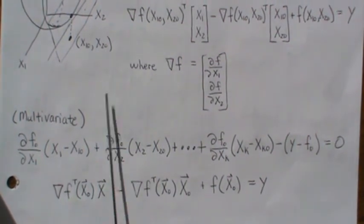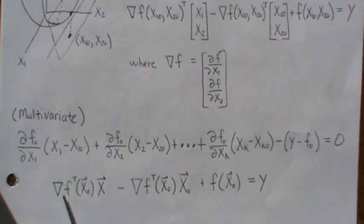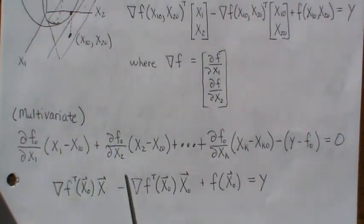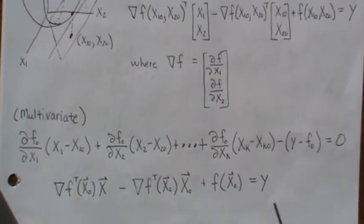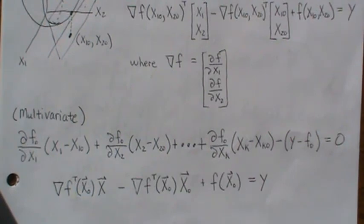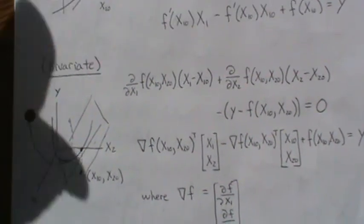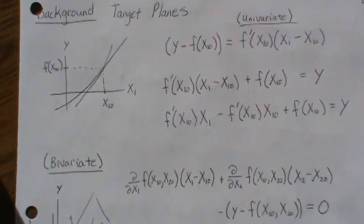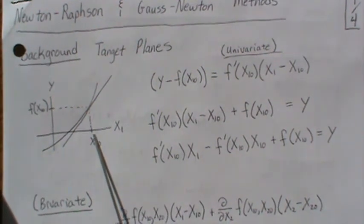Then you can put this in vector notation where this is the gradient, and this is x1, x2 through xk. So this is a k by one vector, and with the transpose it's a one by k vector. So that multiplies up and you get this back, and the same here. Now the reason that this piece is so important when we look at the Newton-Raphson and the Gauss-Newton methods...